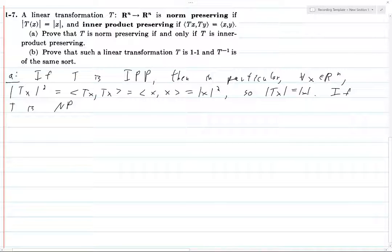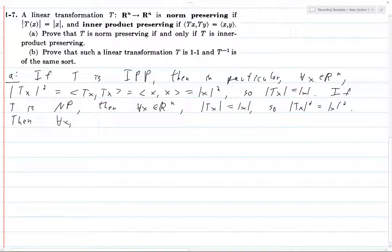That's one direction. If T is NP, that doesn't mean non-polynomial time or whatever, that means norm preserving, then for all x in R^n, |Tx| = |x|, so |Tx|^2 = |x|^2. Then for all x and y in R^n, we have,